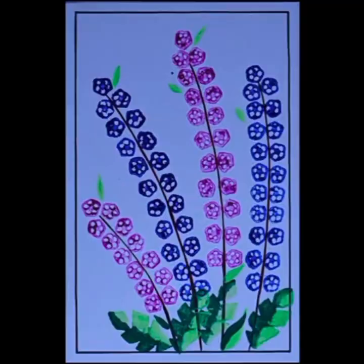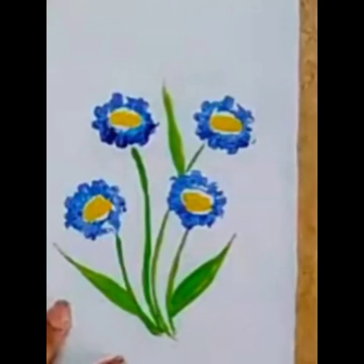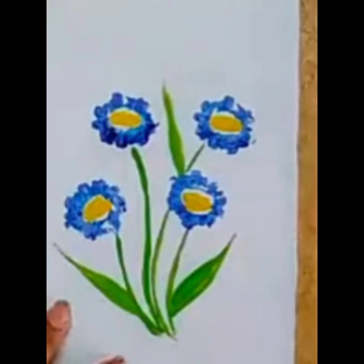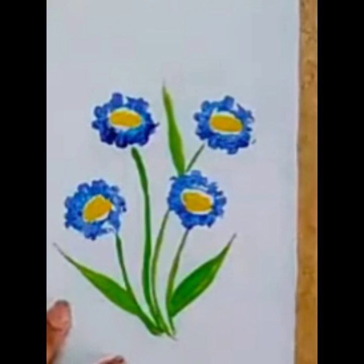Now children, see the picture and make with your own idea. You can use karela, potato, onion for different print. Thank you, children.